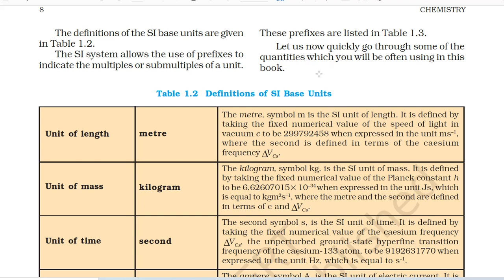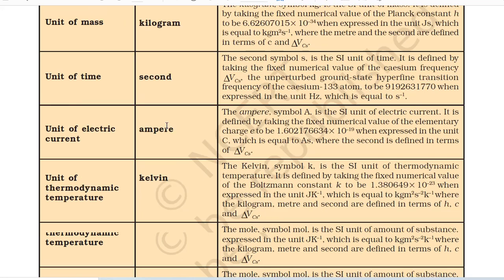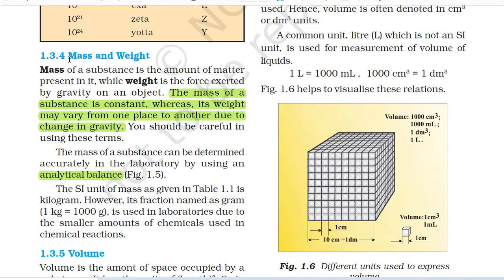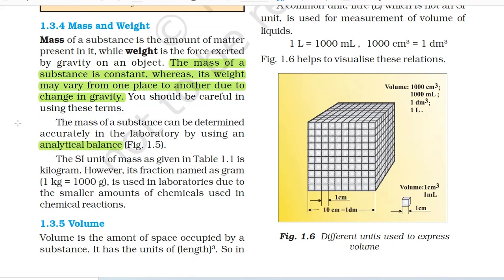1.3.4 Mass and Weight. Mass of a substance is the amount of matter present in it while weight is the force exerted by gravity on an object. The mass of a substance is constant whereas its weight may vary from one place to another due to change in gravity. The mass of a substance can be determined accurately in the laboratory by using an analytical balance. The SI unit of mass is kilogram. However, its fraction named as gram is used in laboratories due to the smaller amounts of chemicals used in chemical reactions.